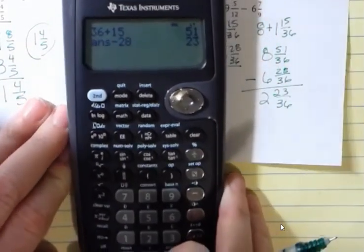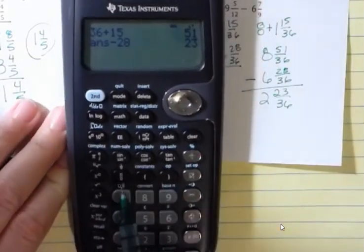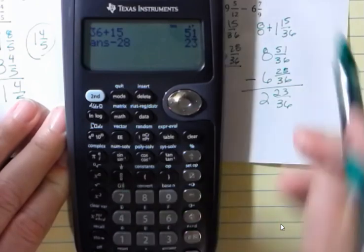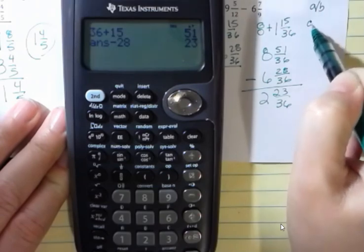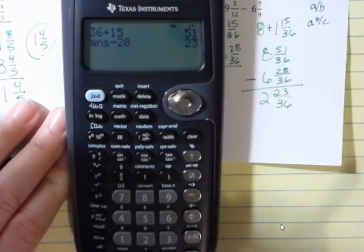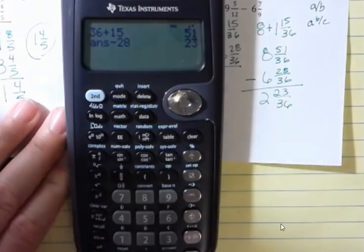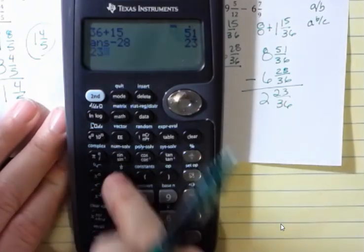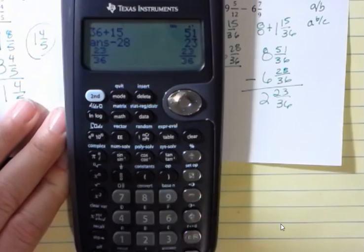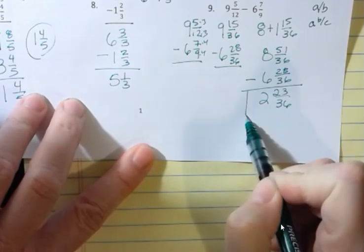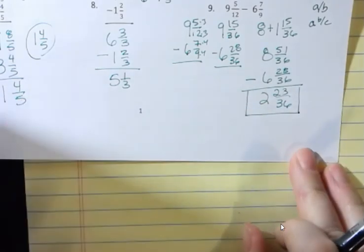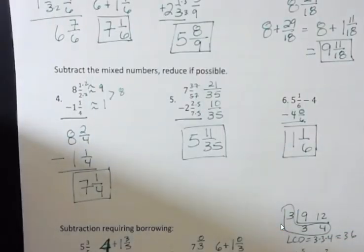You can also use your calculator to reduce. If you have this kind of calculator, here's your fraction button. A lot of calculators have a button that's like A B or A B C — those are the buttons you push to change it into a fraction. I can do 23, then this button, then 36, and hit enter. You see how that's still 23 over 36? That means it couldn't be simplified, so that's my final answer. I'm going to do a few more word problems next that require borrowing so you can see this process again. Have a fantastic day — we'll see you next time.